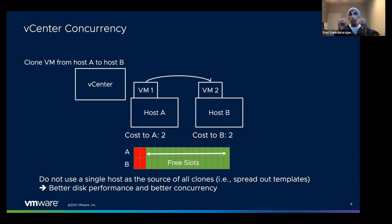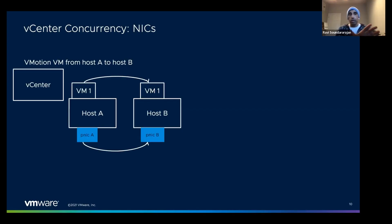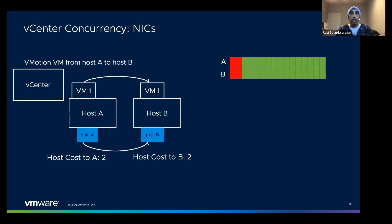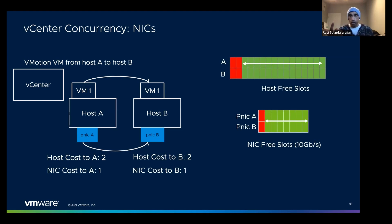Now let's consider vMotion, because that introduces another category — we also have to think about the NIC. vMotion needs both a host component and a NIC component. For a NIC the cost is one and total capacity per NIC is eight (for a 10 Gb or 25 Gb NIC). For the host, capacity is 16 and cost per operation is two. So for vMotion you pay the cost for the host and you also pay the cost for the NIC.